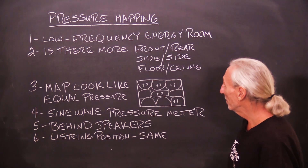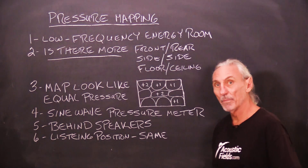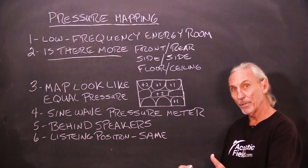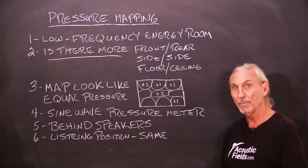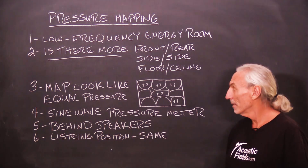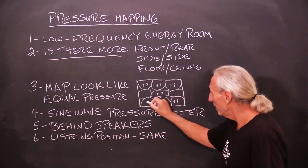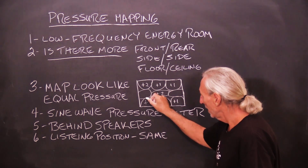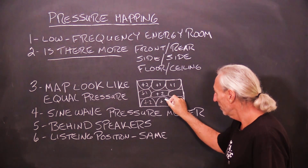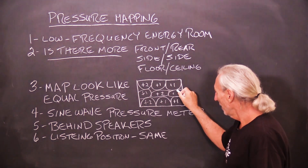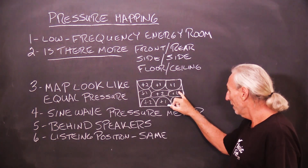So low frequency energy in the room — we want balance. Is there more between the front and the rear wall? Is there more between the side walls? Is there more between the floor and the ceiling? All that can be measured. Our goal with our pressure map is to have these pressure pockets that are really close in pressure to each other. If we've got a plus six here, that doesn't work with the rest of the room, so we've got to work on that.